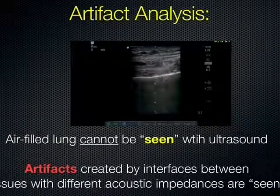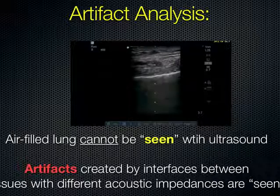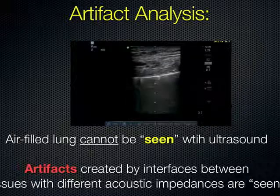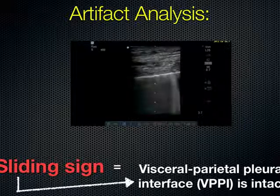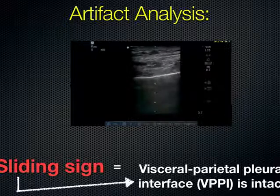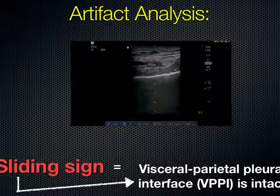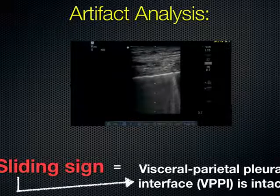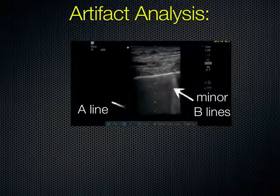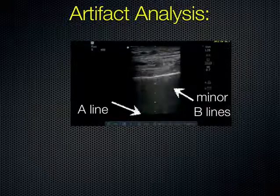We use the high-frequency image to analyze artifact. We can't see the lung itself, but we can see artifacts created by interfaces between tissues with very different impedances, such as the pleural line and lung. Here's the visceral parietal pleural interface showing a sliding sign, which tells us the visceral pleura is adjacent to the parietal pleura and they're sliding against each other. You can appreciate very small B lines showing motion at the pleural interface — it looks a bit like ants crawling across, or shimmers. We also see an A line because this lung is mostly aerated.